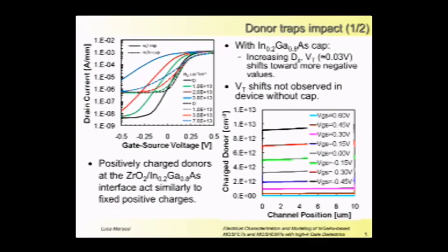We made some simulations to evaluate this phenomenon. Dotted lines are for a device with no cap. We performed simulations with different concentrations of donors at the interface. All the current characteristics converge to the same threshold voltage.